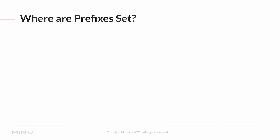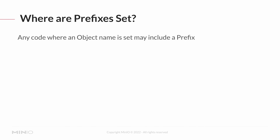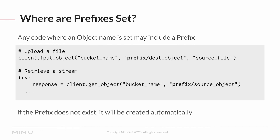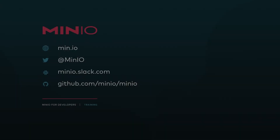How do you set prefixes? It's very simple — any code where an object name is set may include a prefix. There are a couple of methods where the prefix itself is a separate item in the list of arguments, but generally speaking, all you need to do is put a prefix on the object name and it will be used. Here's a simple example: the fput_object that we did in the last lesson takes a bucket name, a destination object, and a source file. All we need to do to use prefixes is to simply put the prefix and a slash before the name of the destination object. If I'm retrieving a stream, that takes a bucket name and an object name — I simply put the prefix in front of the object name and I'm good to go. Please note: if the prefix does not exist, it will be created during the process of creating the object, so that makes prefixes very easy to use.